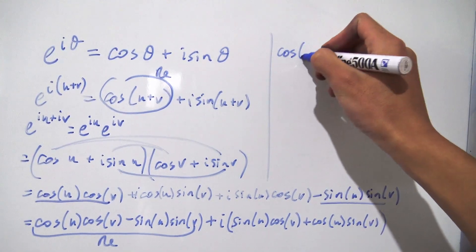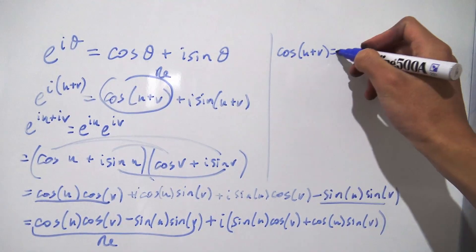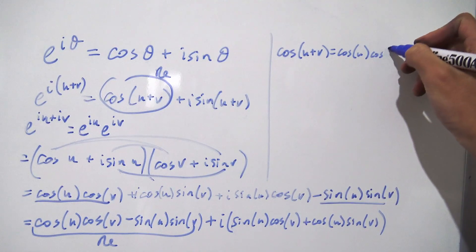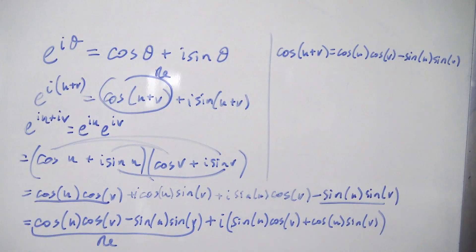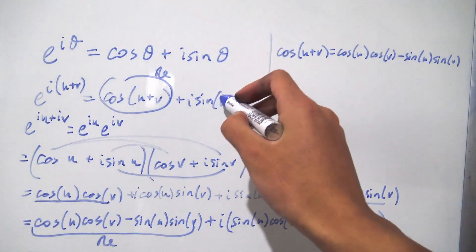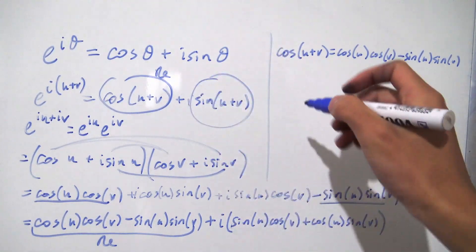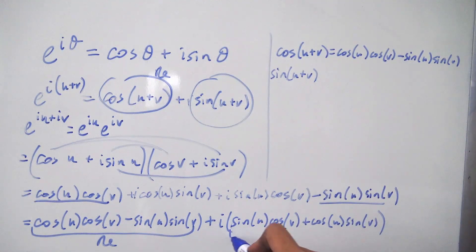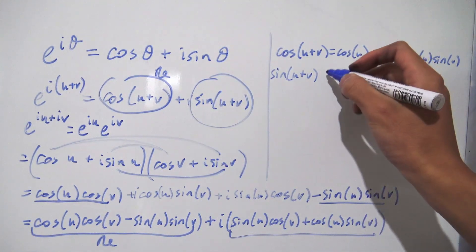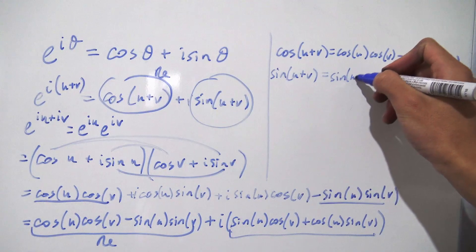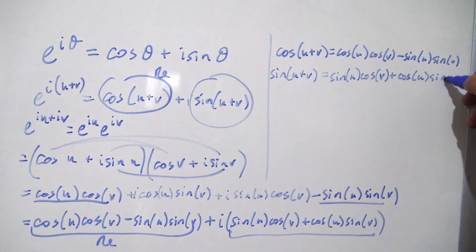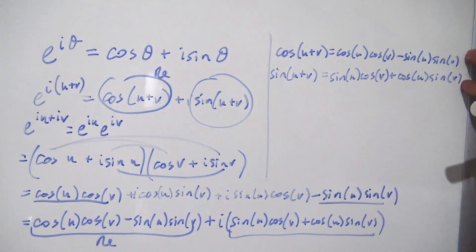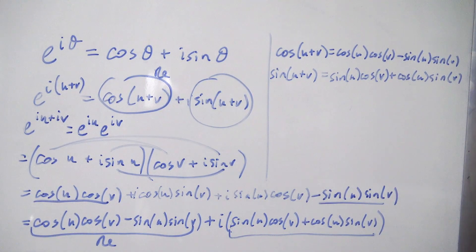From this comparison, we can deduce that cosine of u plus v equals cosine of u cosine of v minus sine of u sine of v. And the sine of u plus v equals sine of u cosine of v plus cosine of u sine of v. Those are exactly the two angular sum identities for the cosine and sine.